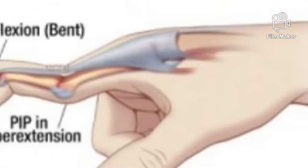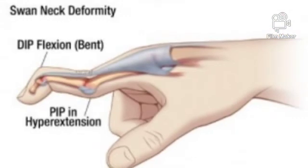Swan neck deformity: this is a form of hand deformity which occurs when the distal interphalangeal (DIP) joint of a finger flexes and the proximal interphalangeal (PIP) joint extends, while the MCP joint is in a neutral position or slightly extended.